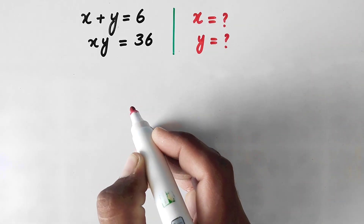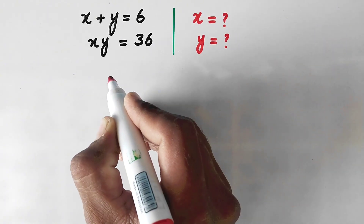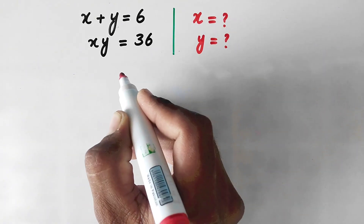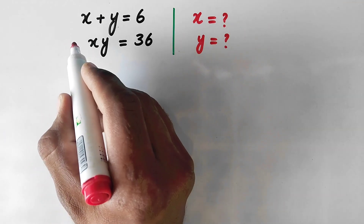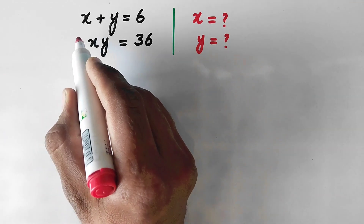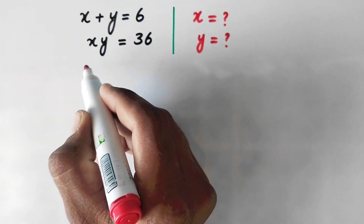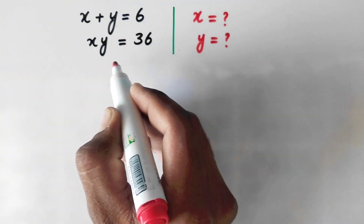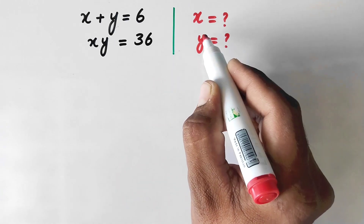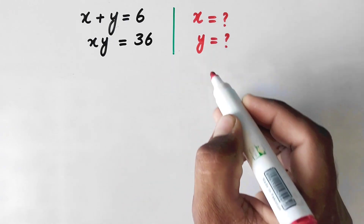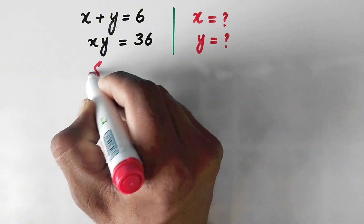Hello everyone and welcome to Explored Maths. In this video we are going to solve a very nice algebraic problem: if x plus y is equal to 6 and x times y is equal to 36, then what are the values of x and y? So let us see its solution.